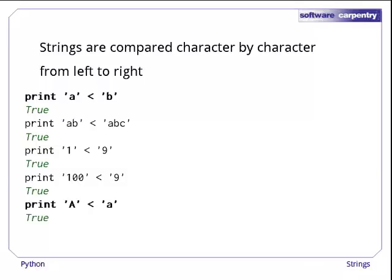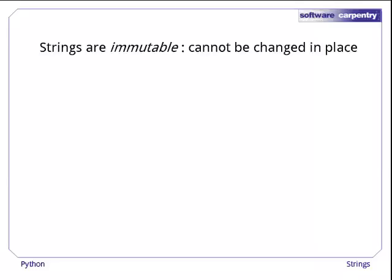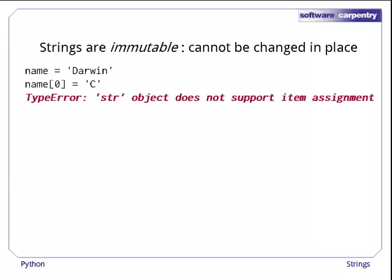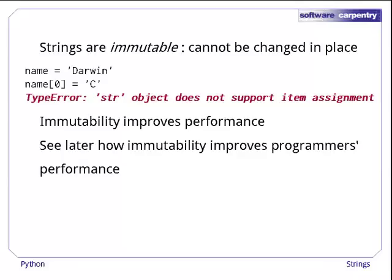It may also surprise you to discover that an uppercase A is less than a lowercase a. In fact, every uppercase letter comes before every lowercase letter. One more surprise is that strings are immutable, i.e., they cannot be changed in place. For example, if we try to overwrite the D in Darwin with a C, Python gives us an error. This is different from most languages, which allow strings to be changed in place. Python strings are immutable because it improves performance by allowing Python to do some internal optimization that wouldn't be possible if strings could be changed arbitrarily. It also helps make programmers more productive by making some kinds of errors impossible. We'll explore this in more detail in the next episode.